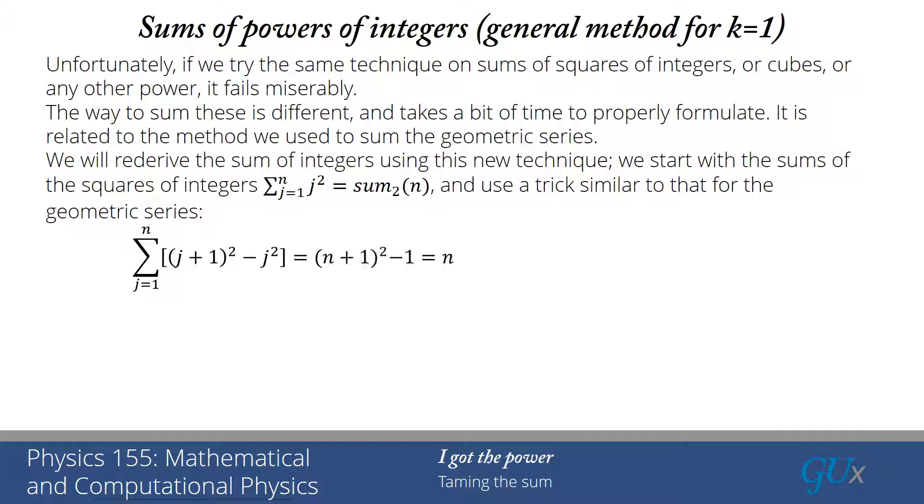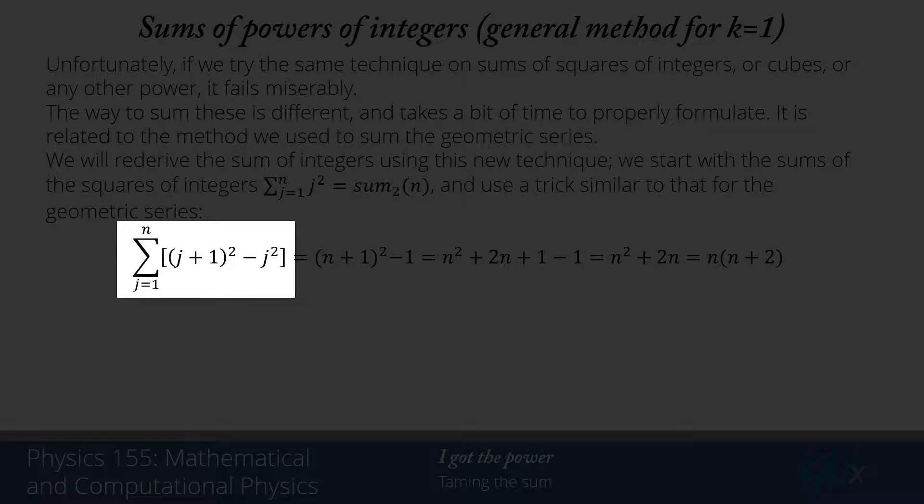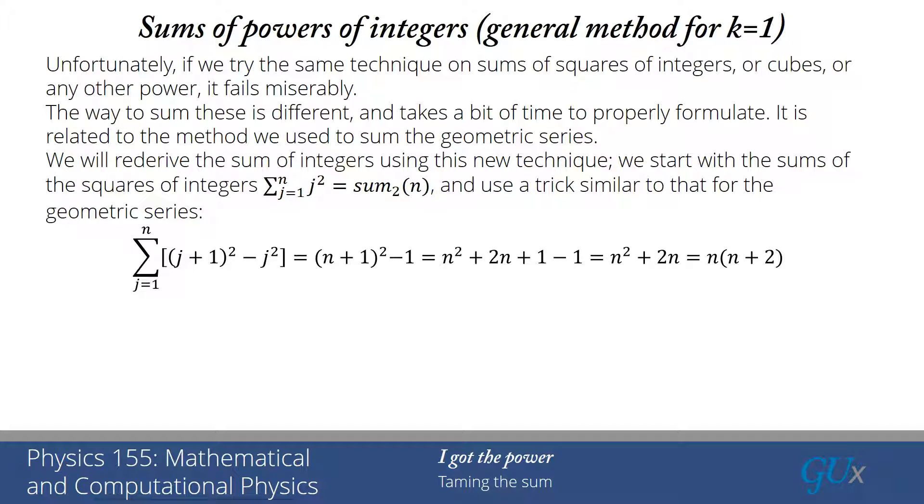We're going to sum j plus 1 squared going from 1 to n and subtract from that j squared going from 1 to n. There's a 2 that occurs when j equals 1 on the left hand side which will cancel with the 2 that occurs when j equals 2 on the right hand side and so forth. All those intermediate terms cancel. So I'm left just with two terms. This is where it's very similar to the geometric series and it's n plus 1 squared minus 1. I get n squared plus 2n plus 1 minus 1 which becomes n squared plus 2n and I can factor an n out of that so I get n times n plus 2.